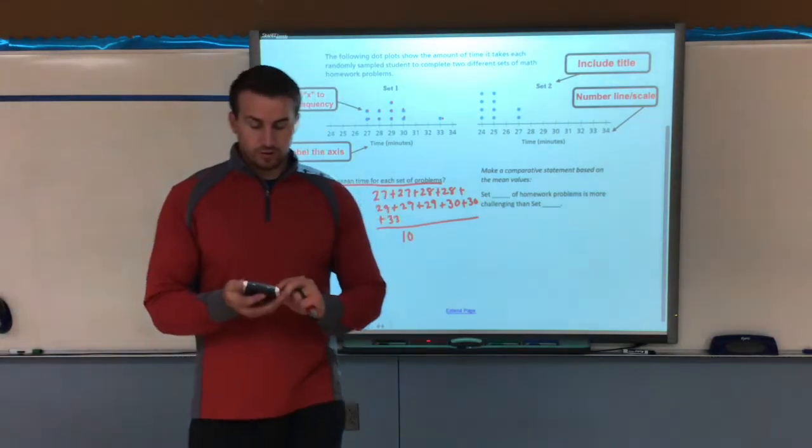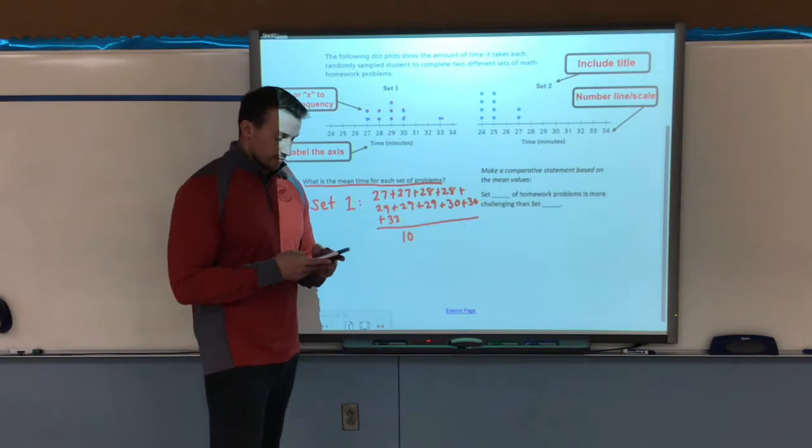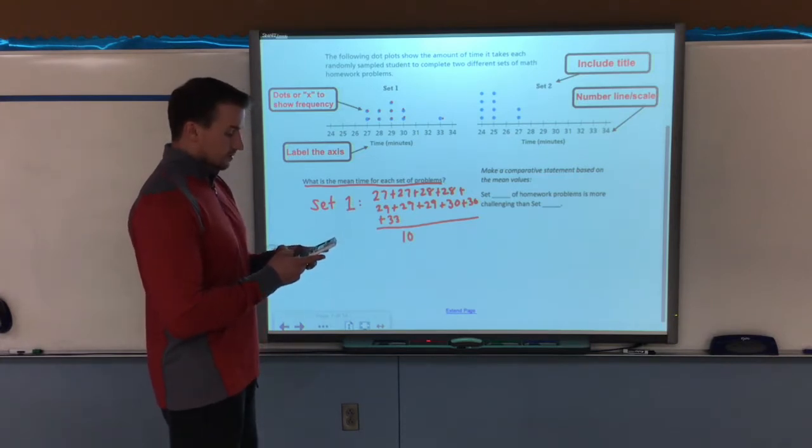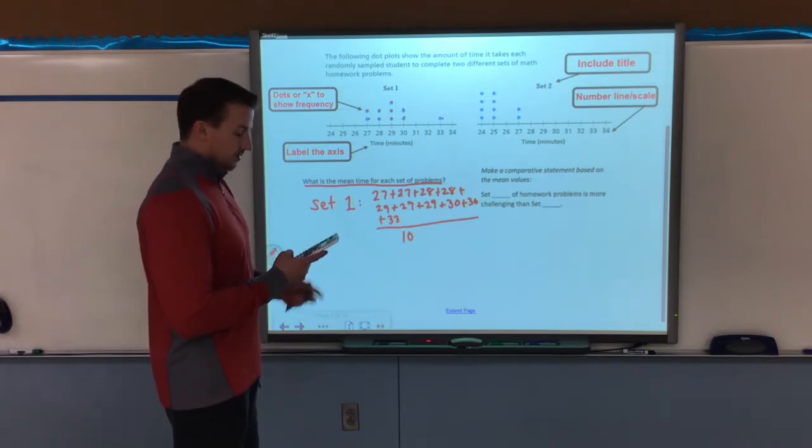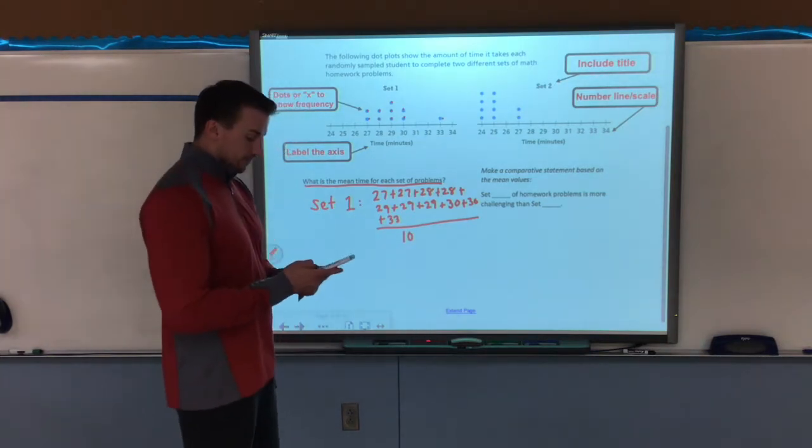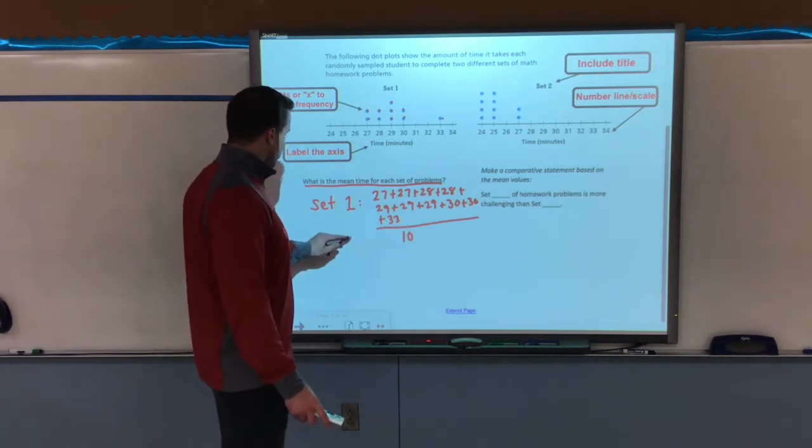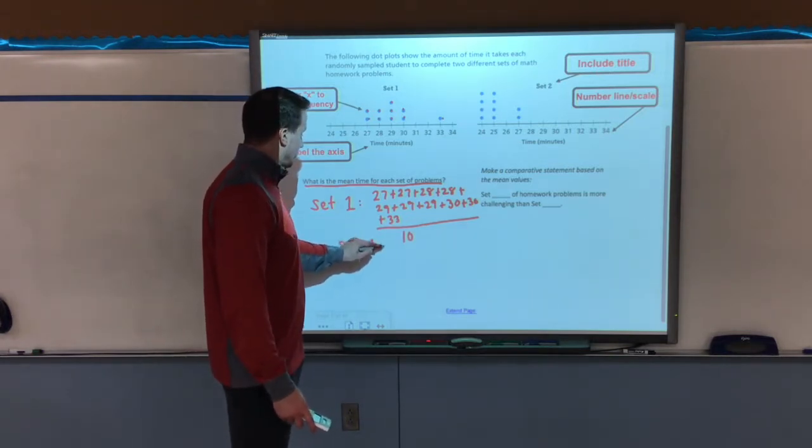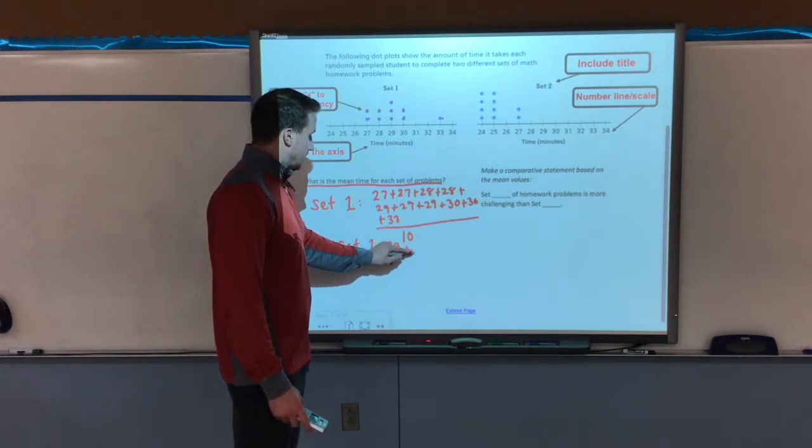I'm going to add them up on my calculator real quick to get my answer. So I have 27 twice, 28 twice, 29 three times, 30 twice, and 33. Gives me a grand total of 290. Divide that now by 10, I get 29. So for set one, 29, and that's in minutes.